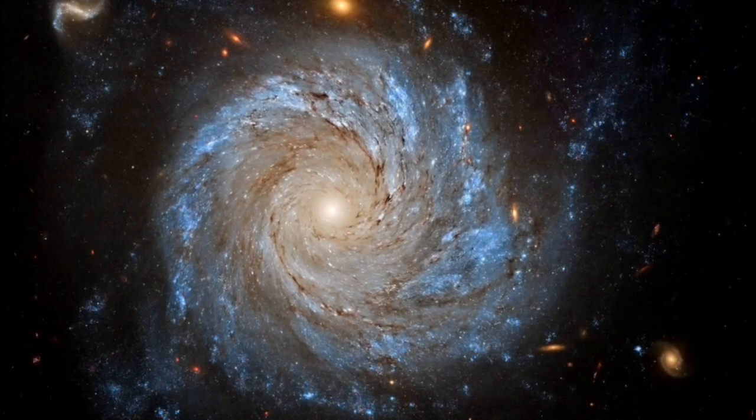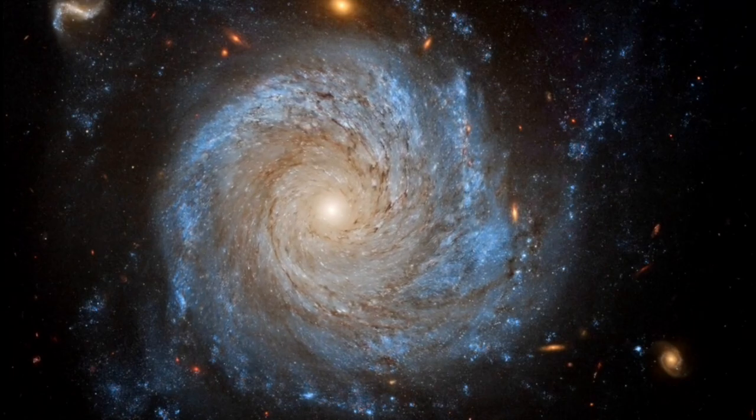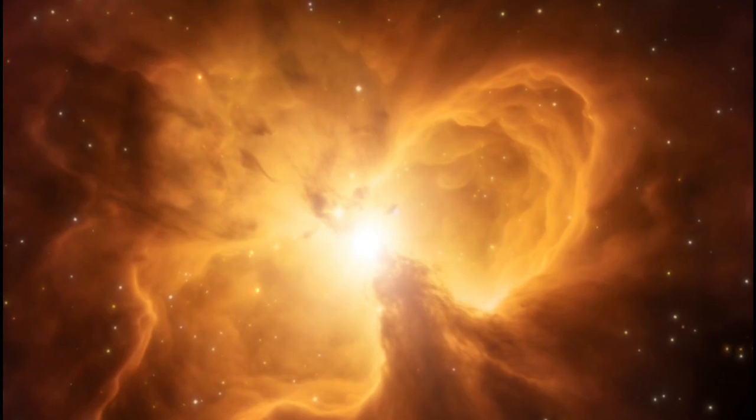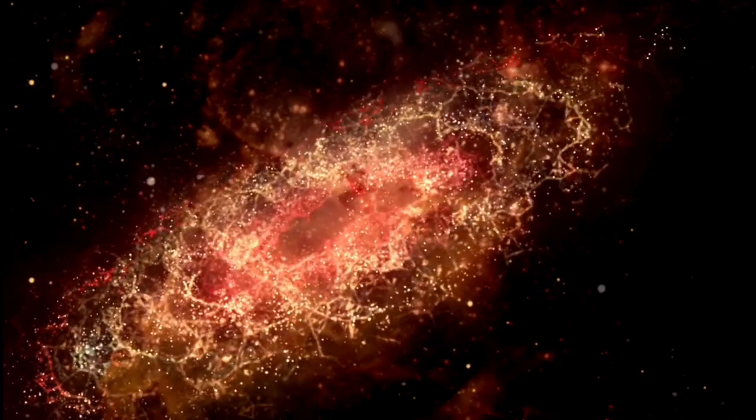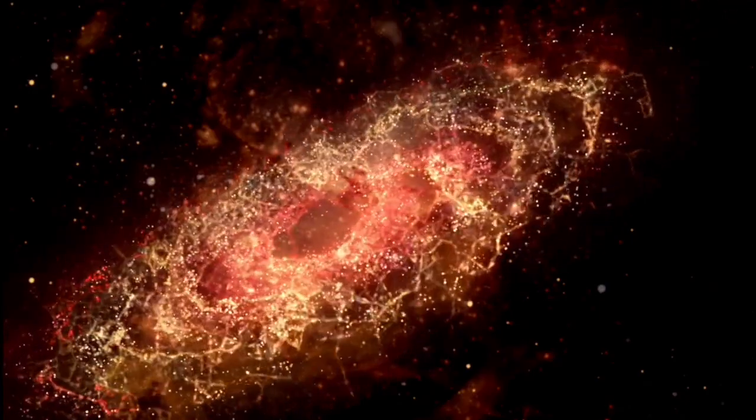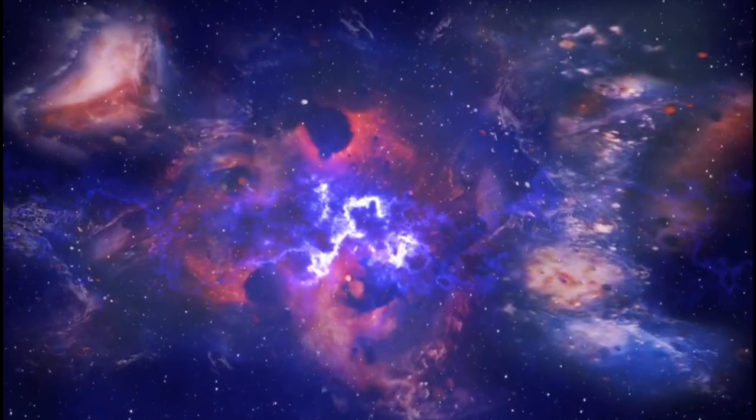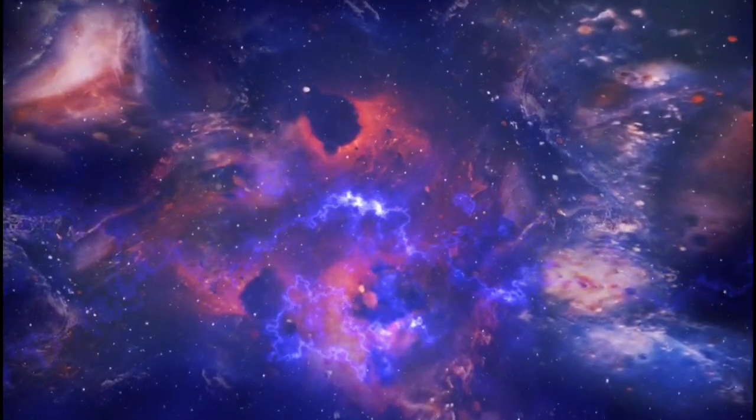Betelgeuse, also known as Alpha Orionis, is one of the most famous stars in the night sky, being the tenth brightest and seventh brightest visible from much of North America, Europe, and Canada. Its name comes from Arabic and means armpit of the giant, in reference to its position in the constellation.